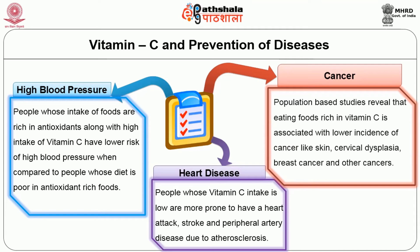People whose vitamin C intake is low are more prone to heart attack, stroke and peripheral artery disease due to atherosclerosis. Regarding high blood pressure, people whose intake of foods rich in antioxidants along with high intake of vitamin C have a lower risk of high blood pressure compared to people whose diet is poor in antioxidant-rich foods.